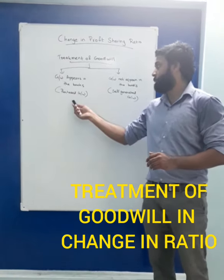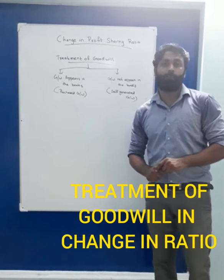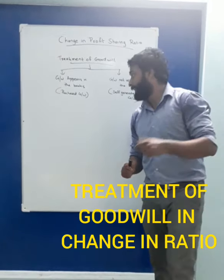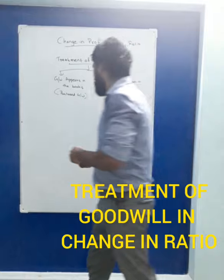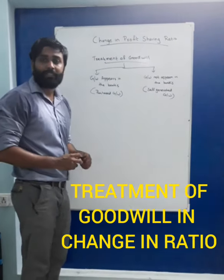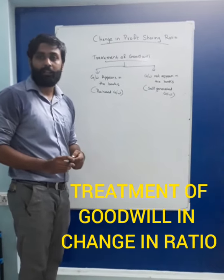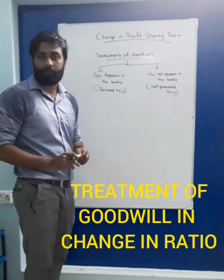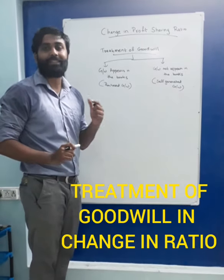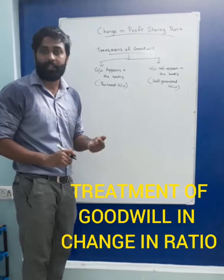What is the Treatment of Purchase Goodwill and Self-Generated Goodwill when there is a change in profit? Purchase Goodwill is recorded on the asset side of the balance sheet, and since it is an asset, it has a debit balance.